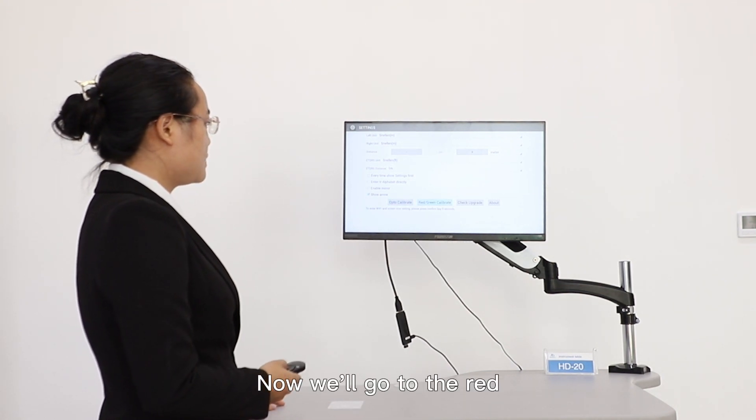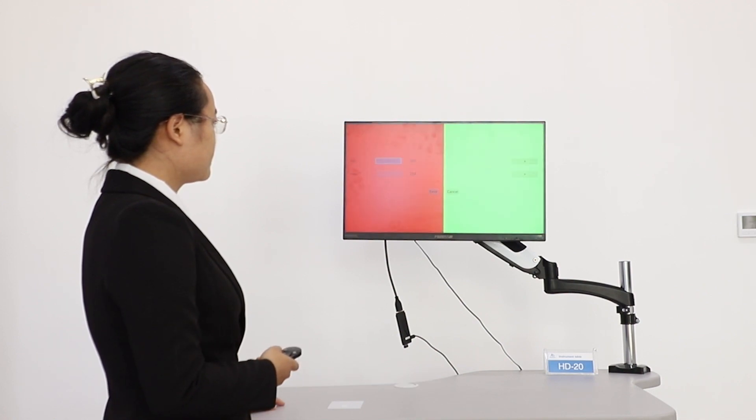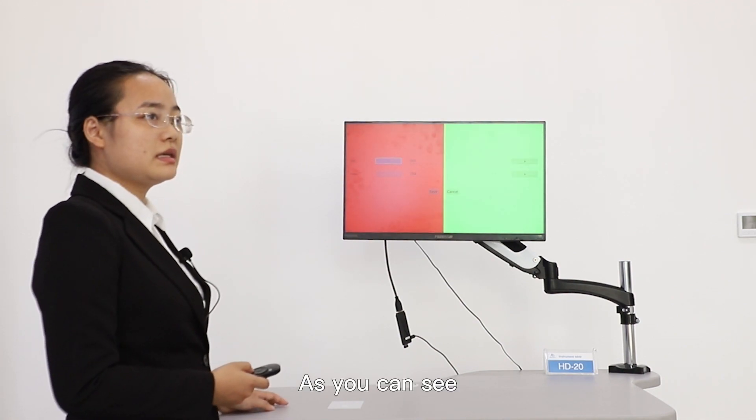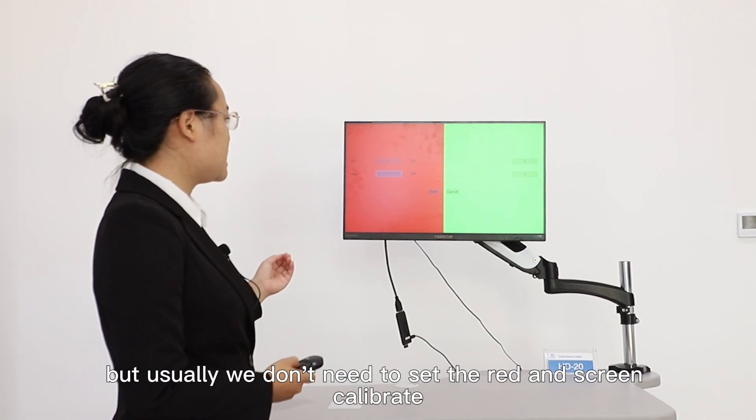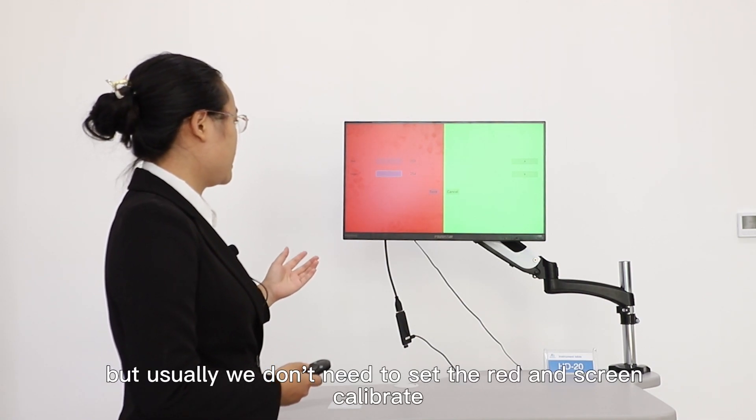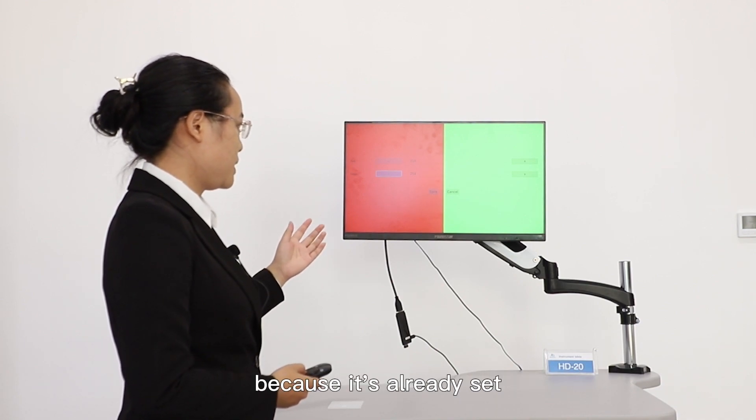Now we will go to the red-green calibrate. As you can see, it can be set. But usually we don't need to set the red and green calibrate because it's already set.